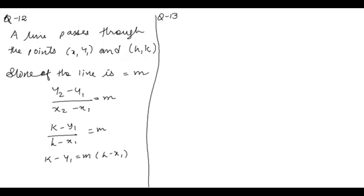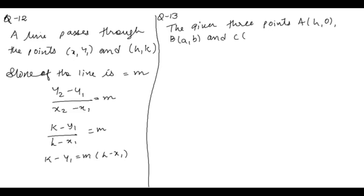Let's understand question 30. If there are 3 points — (x, 0), (a, b) and (0, k) — lying on the same line, then I can say that the given 3 points (x, 0), (a, b) and (0, k) are collinear.